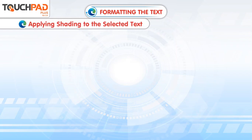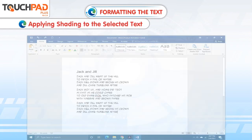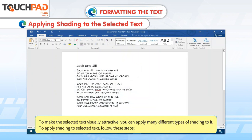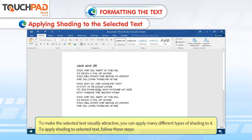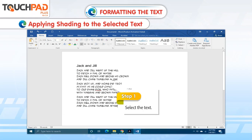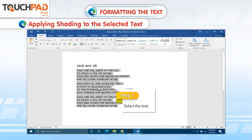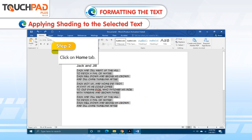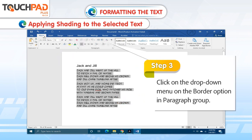Applying Shading to the Selected Text. To make the selected text visually attractive, you can apply many different types of shading to it. To apply shading to selected text, follow these steps. Step 1. Select the text. Step 2. Click on Home tab. Step 3. Click on the drop-down menu on the Border option in Paragraph group.